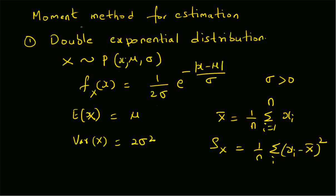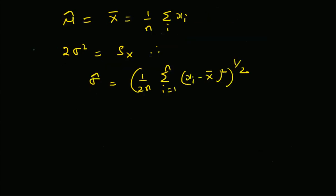To summarize, in this video we have looked at the application of the method of moments for estimation of parameters of two distributions. For the double exponential distribution with PDF (1/(2*sigma)) * exp(-|x - mu|/sigma), the mean is mu and the variance is 2*sigma^2. Equating theory and sample values gives mu_hat as the sample mean and sigma_hat = sqrt( 1/(2n) * summation of squared differences ).